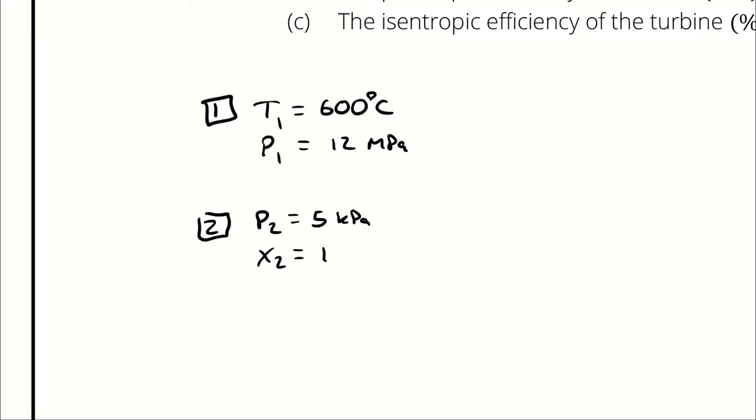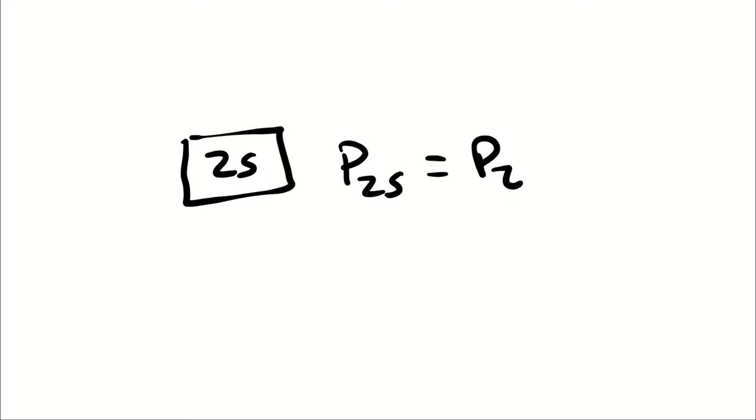In order to actually answer the question, I need to establish a third state point, which is what the outlet would be if everything were perfect, if I had an isentropic process. Because remember, ideal compression and expansion are represented by an isentropic process. For state 2s, where everything is perfect, this hypothetical state point has the same pressure as P2, because I'm evaluating the same turbine, just at different operating efficiencies. Then S2s is equal to S1.